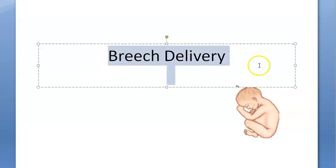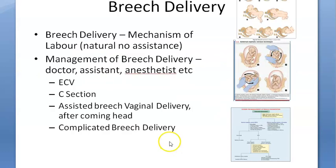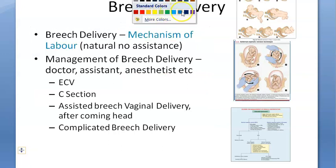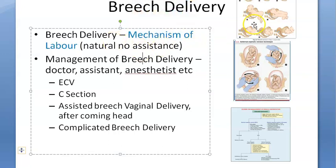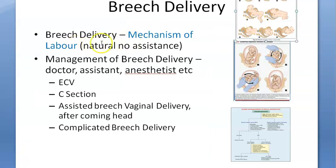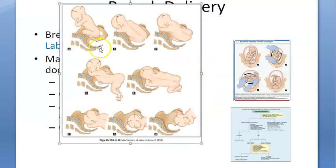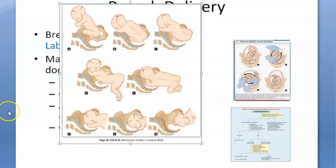In this video we want to look at breech delivery. First of all, let us look at the mechanism of labor — that means naturally how the baby plans to come out without any assistance. So this is the natural mechanism of labor. First the buttocks will come out, then the shoulders, and then the head.